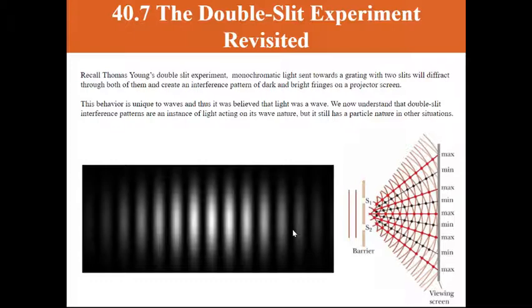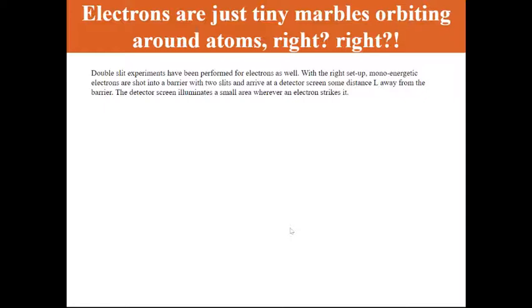We're going to see that electrons are the same. Now imagine a similar setup, but rather than setting a laser and shooting it into this barrier with two slits, we're now going to have a source of electrons, an electron beam. And the idea is that the electrons are all set up so that they have the same energy. We call them monoenergetic. And you aim the beam towards a barrier with two slits, and on the other side, some distance away, there's this detector screen.